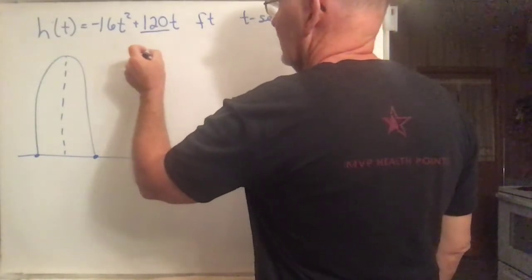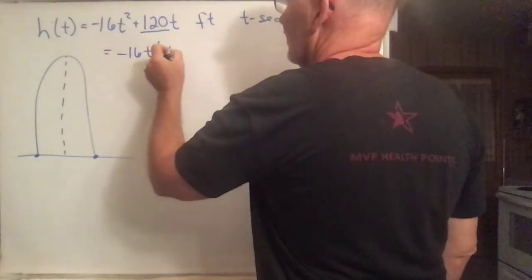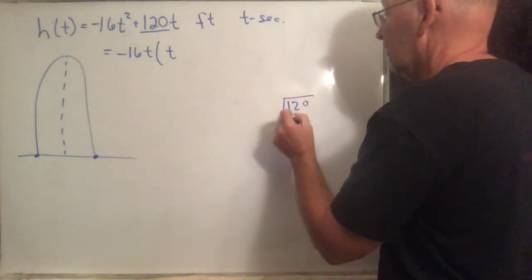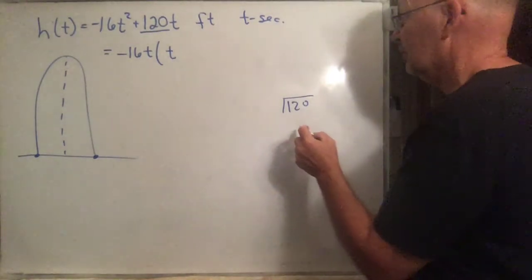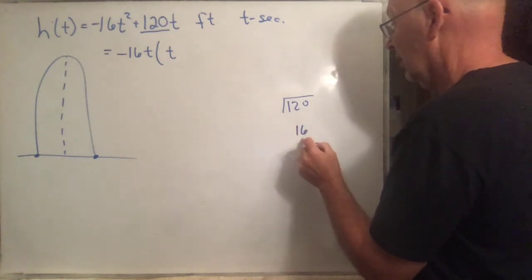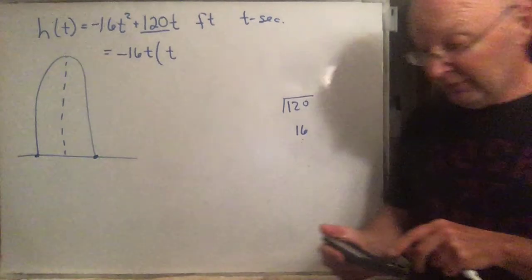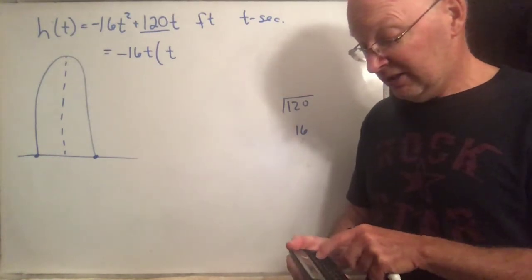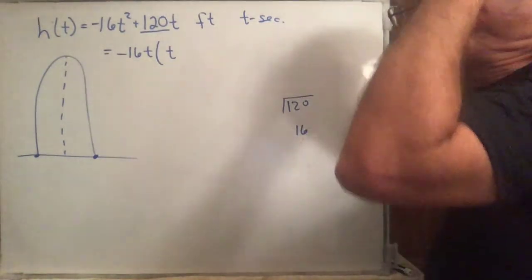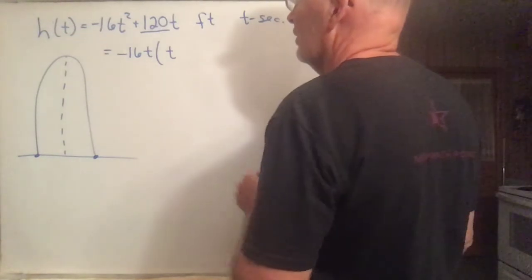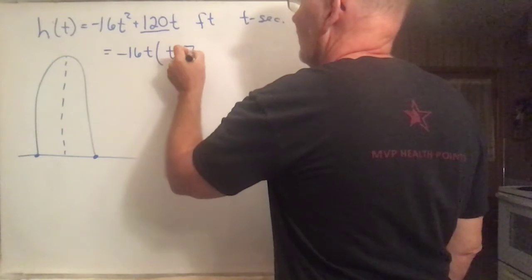So if I factor a negative 16t out of this, I'm going to be left with a t here, and 120 divided by 16. I need a calculator here - 16 times what gives you 120? Let me get a calculator. There's no reason for us to have numbers that don't work out really nicely, but anyway, maybe let's figure it out here. So 120 divided by 16 is 7.5. Okay, so 7.5.